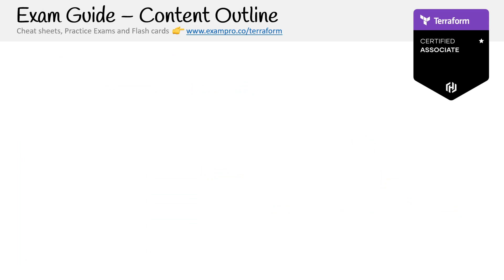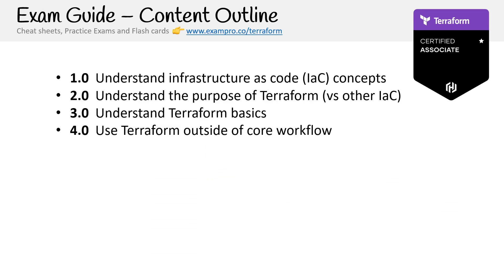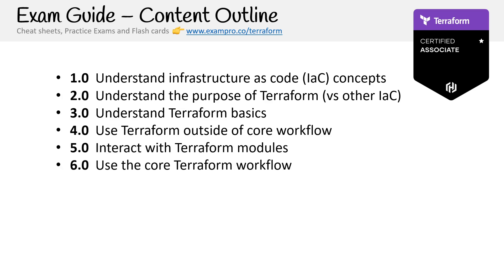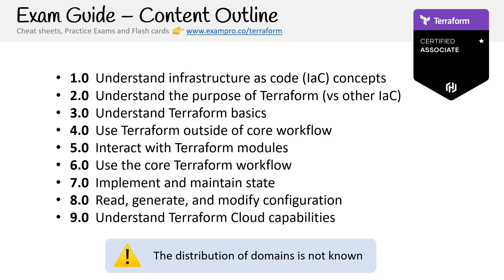In terms of the content outline, there are nine domains: understand infrastructure as code concepts, understand the purpose of Terraform, understand Terraform basics, the use of Terraform outside core workflows, interact with Terraform modules, use the core Terraform workflow, implement and maintain state, read generate and modify configuration, and understand Terraform cloud capabilities. Something different about HashiCorp certifications is they do not provide distribution or weighting of domains. We can look at the exam guide outline to infer our own weighting, but they do not provide it.